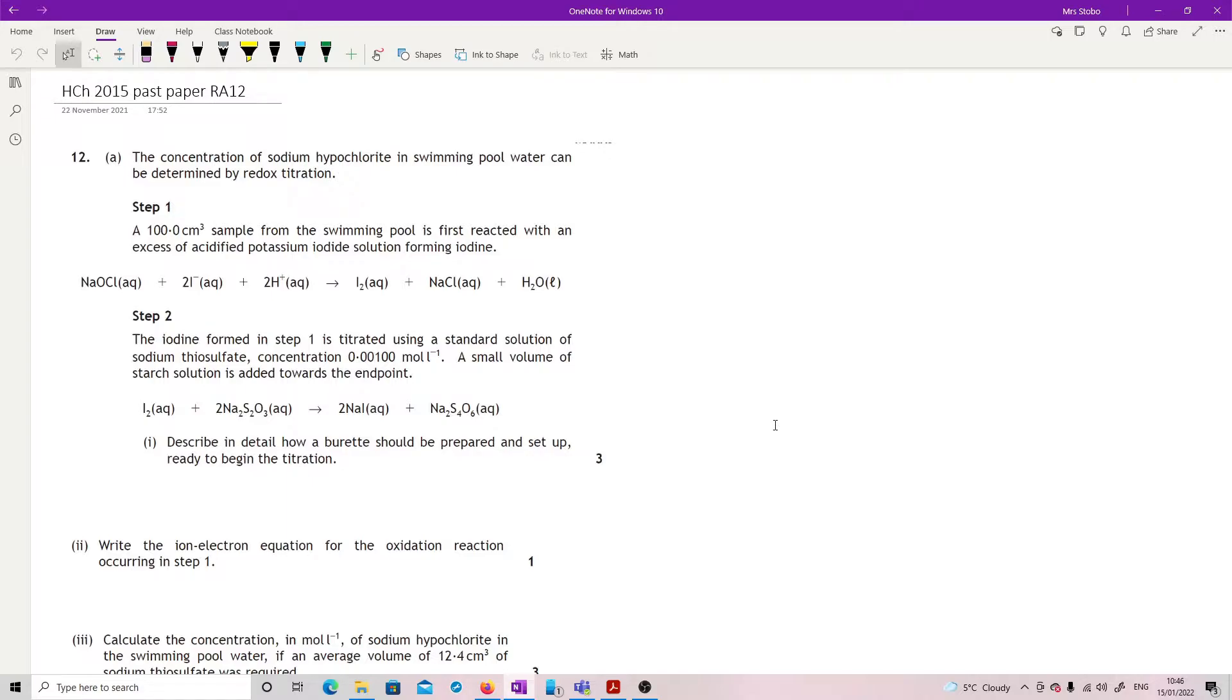The iodine formed in step one is titrated against a standard solution of sodium thiosulfate with a concentration of 0.00100. A small volume of starch solution is added towards the end point. So just to be clear on what we're doing here, this is what we're trying to determine, and we are making iodine which goes to this, which we can then react with the thiosulfate.